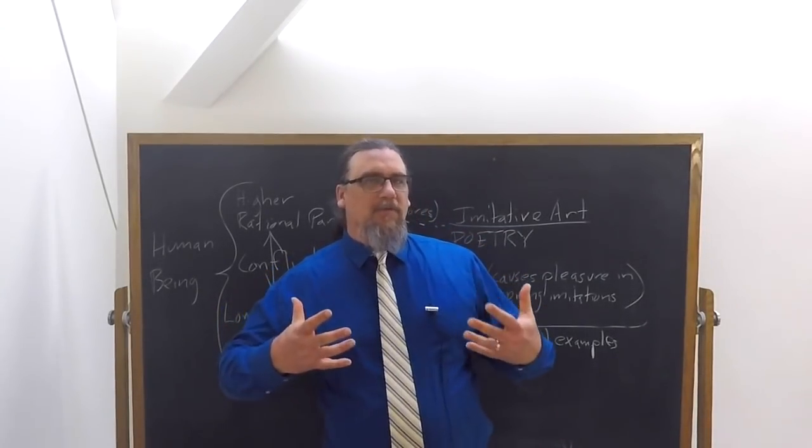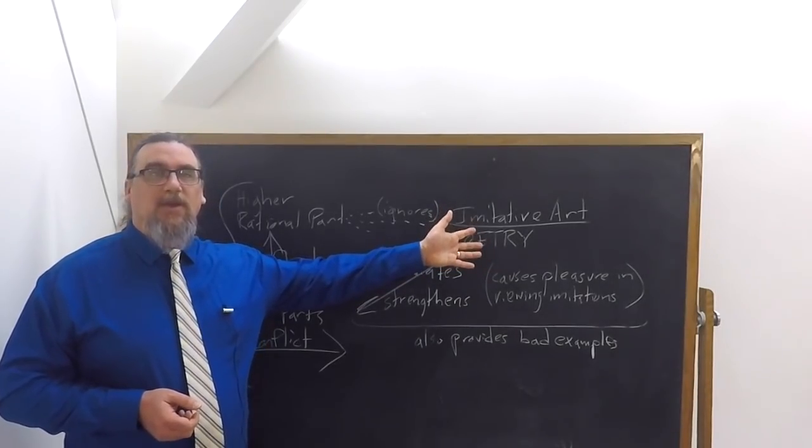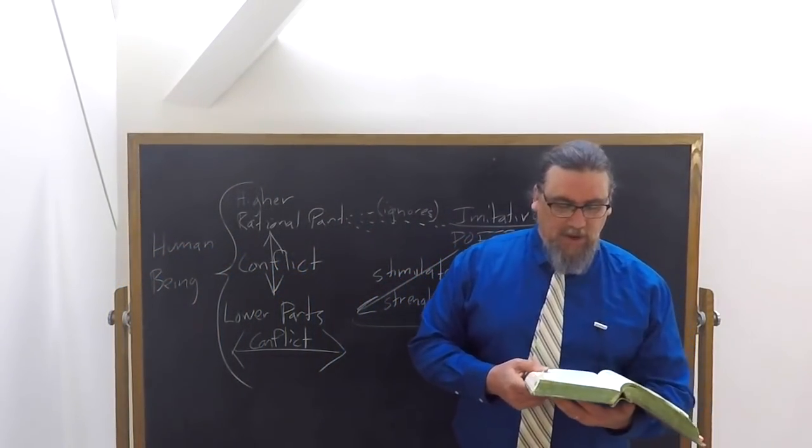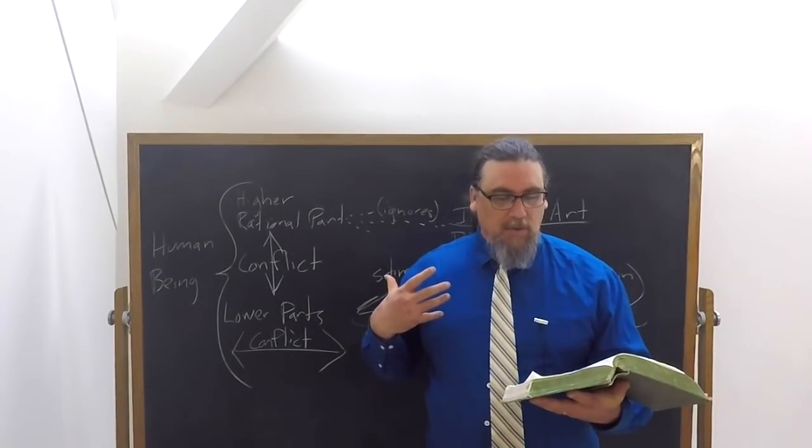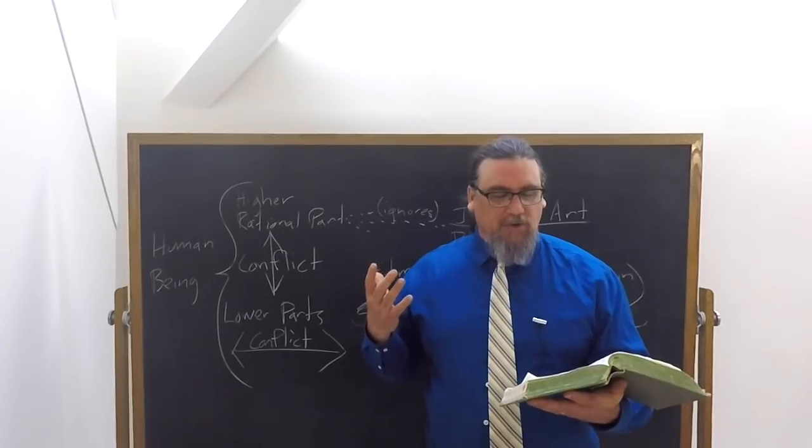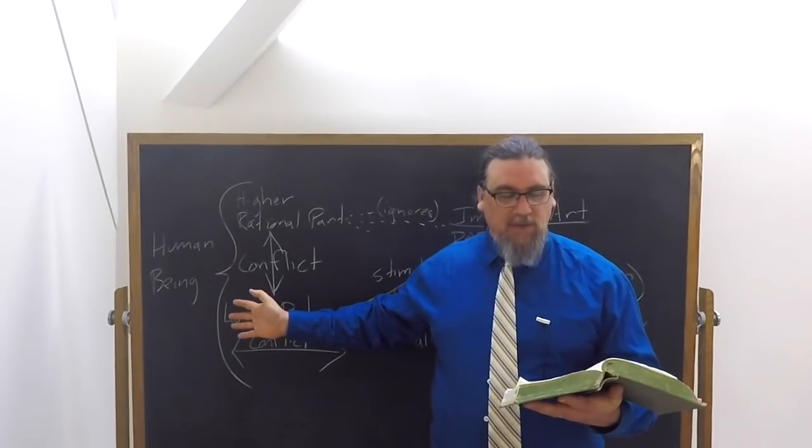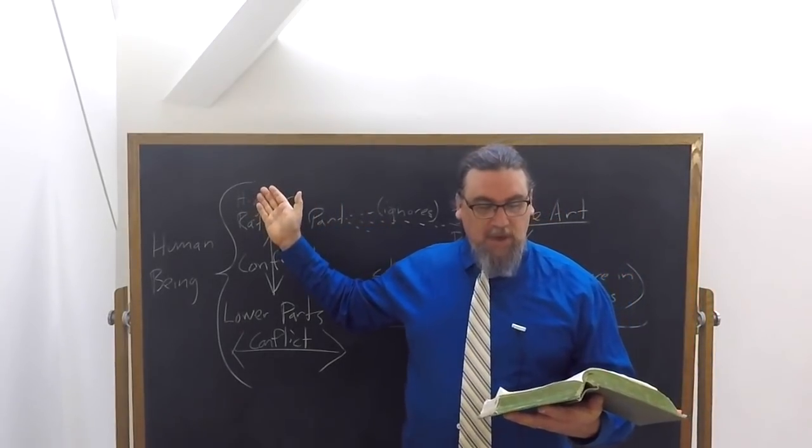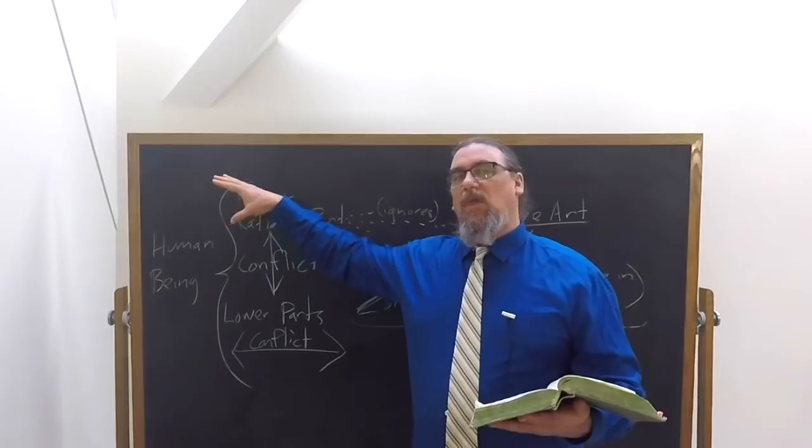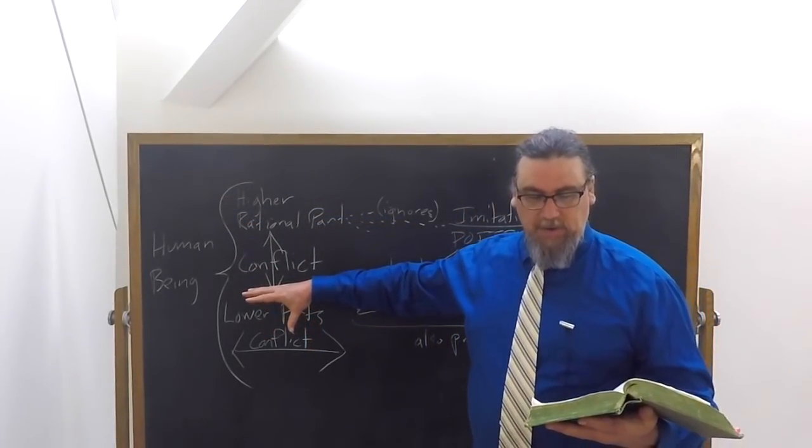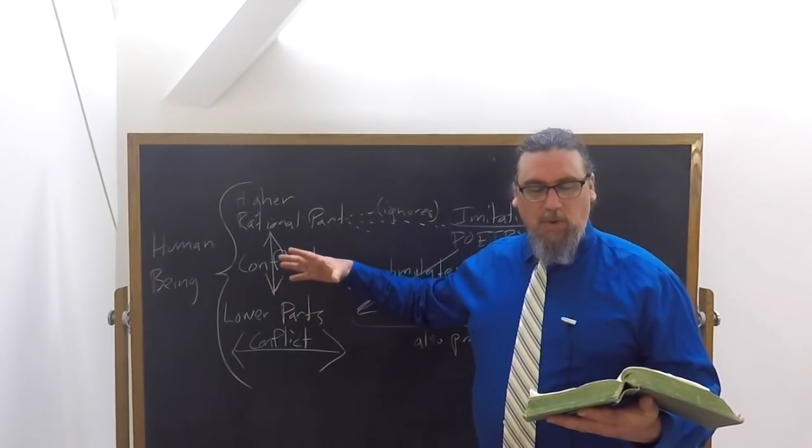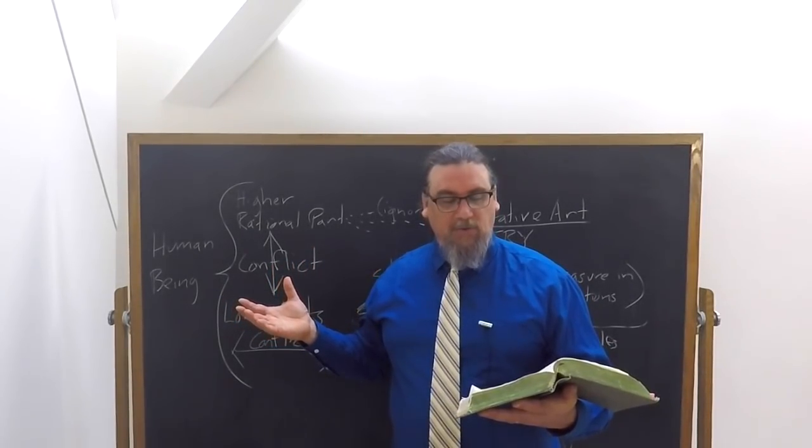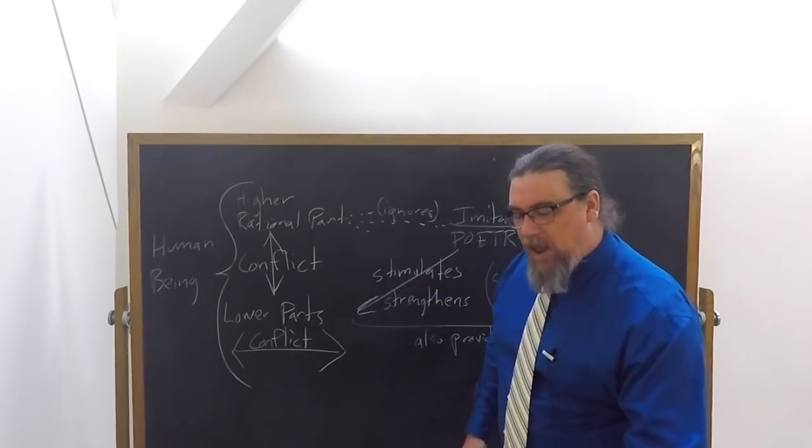So this pleasure that we feel in representations, in imitation, in our involvement in it, ends up creating habits and mindsets. So he says, the part of the soul that was forcibly restrained and hungered for tears and a good cry and satisfaction, because it's its nature to desire these things, that's the element in us the poets satisfy and delight. The best element within us, the best part, because it has never been properly educated by reason or even habit, relaxes its guard over this other part. And he says, insomuch as this is contemplating the woes of others, and it's no shame to it to praise and pity another who claims to be a good man abandons himself to excess in his grief, it takes vicarious pleasure in it.